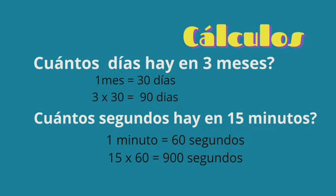Presta mucha atención a los siguientes cálculos, para lo cual debes hacer uso de la tabla de equivalencias. Veamos el primer ejercicio: ¿Cuántos días hay en tres meses? Buscamos en nuestra tabla de equivalencia y nos dice que un mes tiene treinta días. Por consiguiente, multiplicamos esos tres meses por los treinta días. Tres por treinta es igual a noventa. Es decir, que en tres meses hay noventa días.